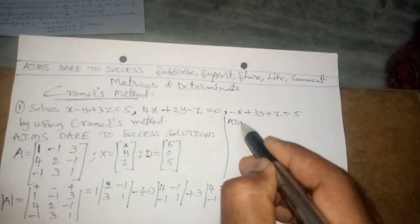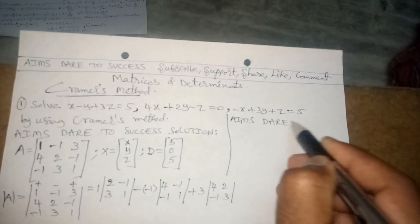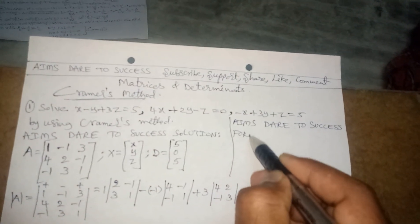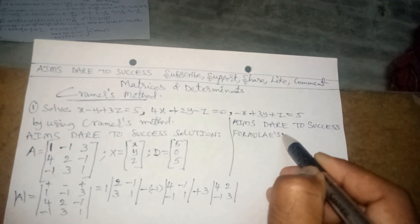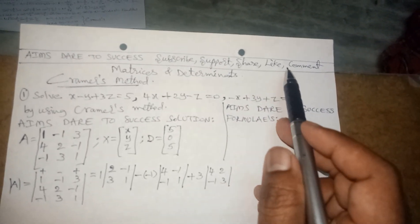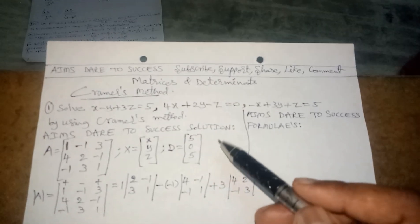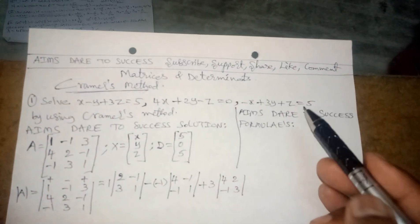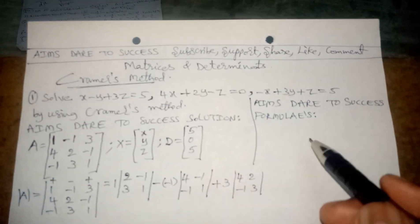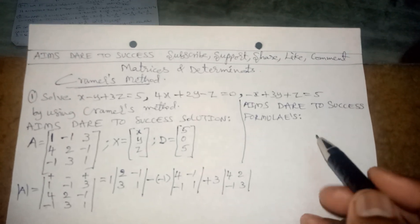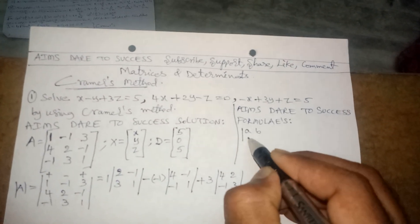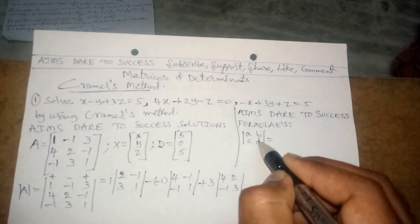Please type 'Aims Date to Success' on YouTube. If you are satisfied with my videos, please subscribe to our channel and share with your friends. The formula for a 2×2 determinant |a b; c d| equals ad minus bc.